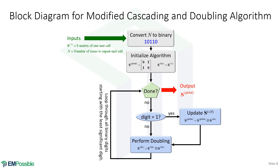Here's the basic algorithm. The first step is to convert the number N — the number of unit cells — to binary. This tells us which scattering matrices to include in the overall global scattering matrix. Then we initialize: the global scattering matrix starts as nothing, and we initialize a binary scattering matrix as the scattering matrix of one unit cell. We'll double the binary scattering matrix each iteration, but only use it to update the global scattering matrix where the binary digits are a one.